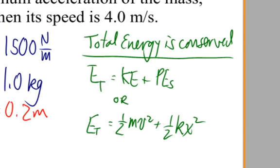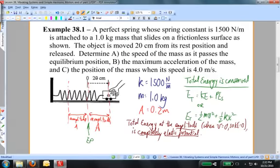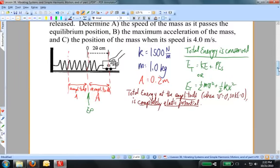The energy sloshes back and forth between elastic potential energy and kinetic energy, and at points between the amplitude and the equilibrium position there are combinations of both. We can calculate the total energy because at the amplitude the kinetic energy is zero — the object comes to a stop, just briefly, for an instant. So the total energy equals the elastic potential energy at that point. Recognizing that is the key to solving this problem.